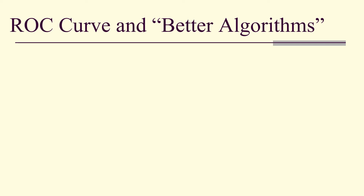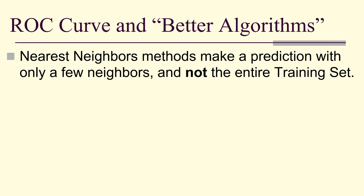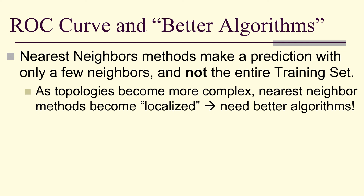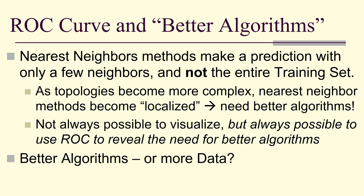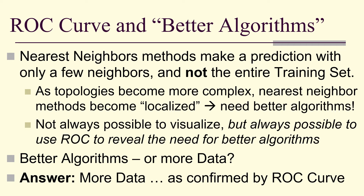The ROC curve reflects the fact that nearest-neighbor methods make predictions using only a few neighbors rather than the entire training set. As topologies become more complex — as n gets larger in the tunable binary data — nearest-neighbor methods become too localized. We can see we need better algorithms. We saw this visually, but we can always use the ROC curve to give the same information even when visualization isn't possible. The key question is: do we need better algorithms or more data? The answer is almost always more data.